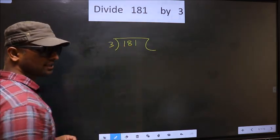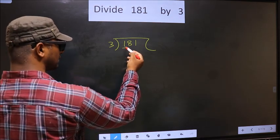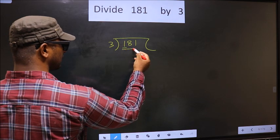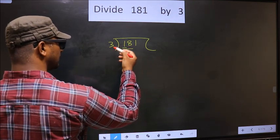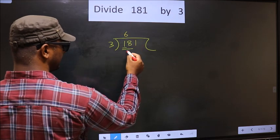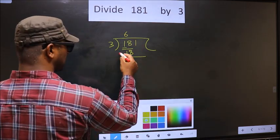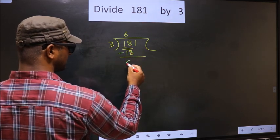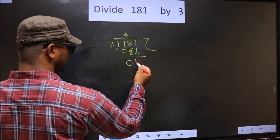Okay, next. Now here we have 1 smaller than 3 so we take 2 numbers, that is 18. When do we get 18 in 3 table? 3, 6, 18. Now you subtract. 18 minus 18, 0.